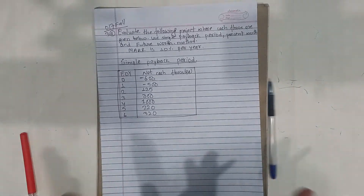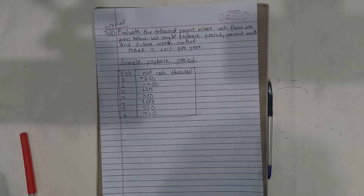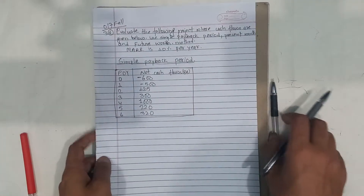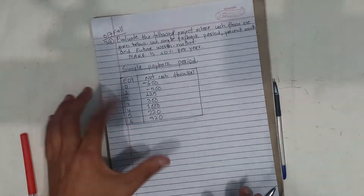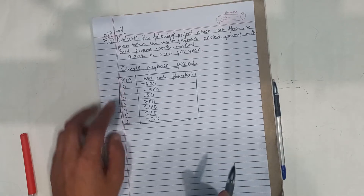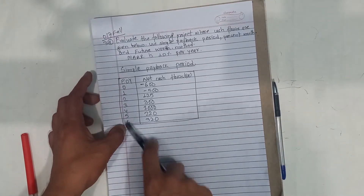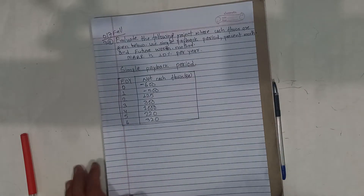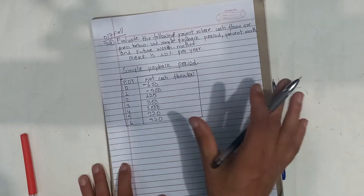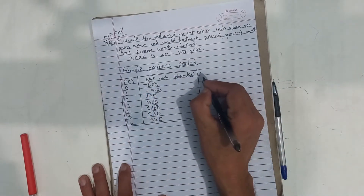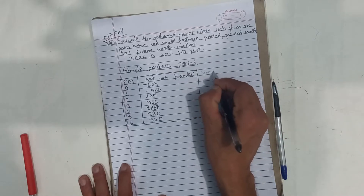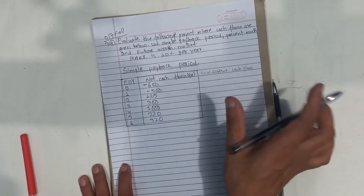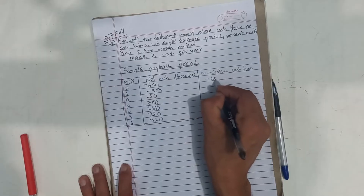Now let's see. We will use simple payback period, present worth, and future worth methods to evaluate this project. The project has a 6-year useful life. We have net cash flow and we need to compute the cumulative cash flow.